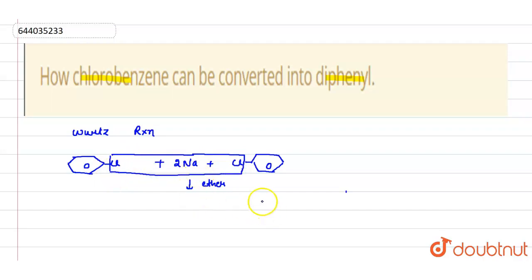So after some time, due to addition of ether, two NaCl comes out and these two phenyl groups get attached to each other. This is forming diphenyl.